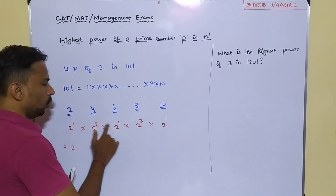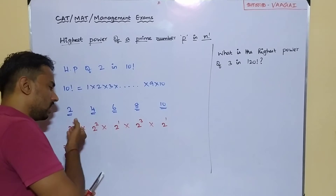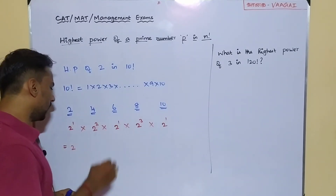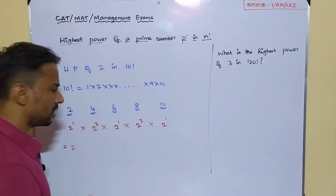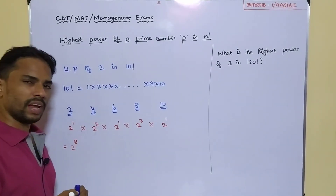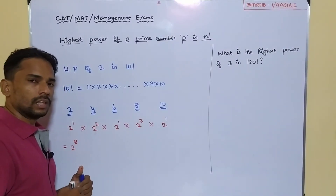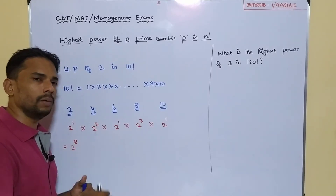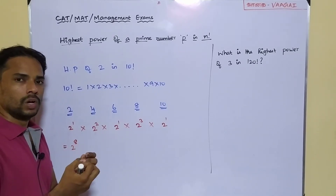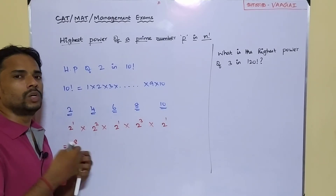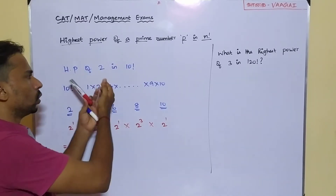To find the maximum power of 2 in 10 factorial, we multiply all these together. Since the bases are the same, we add up the powers: 1 + 2 + 1 + 3 + 1 = 8. So we have 2 power 8 inside this 10 factorial. That means the highest power of 2 available in 10 factorial is 8 — we can collect maximum 8 twos from 10 factorial.